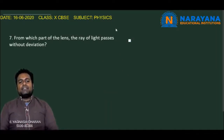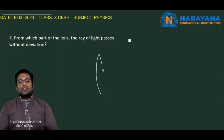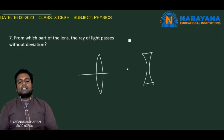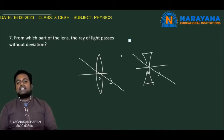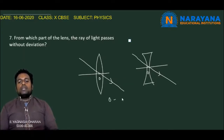The seventh question: From which part of the lens does the ray of light pass without deviation? Whether we consider a convex lens or a concave lens, the light that passes through the optic centre passes undeviated. There is no deviation in the light passing through the optic centre of any lens, either concave or convex. So the ray of light passes without deviation from the optic centre, denoted as O.